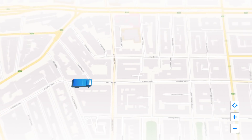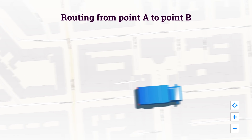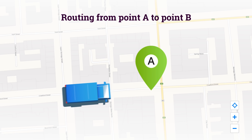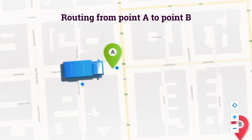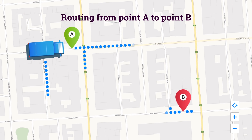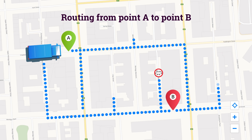Sygic's most advanced routing algorithm is trusted by more than 150 million drivers. It provides the shortest, fastest, or most economical route and considers numerous optional parameters such as vehicle attributes, transported cargo, toll costs, right turns, and more.